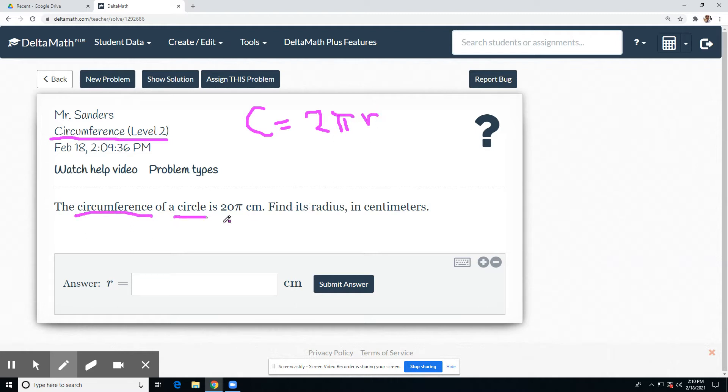The circumference of a circle is 20 pi centimeters. You're asked to find its radius in centimeters. Notice we're already in centimeters in our answer, so that means we don't have to worry about labels.